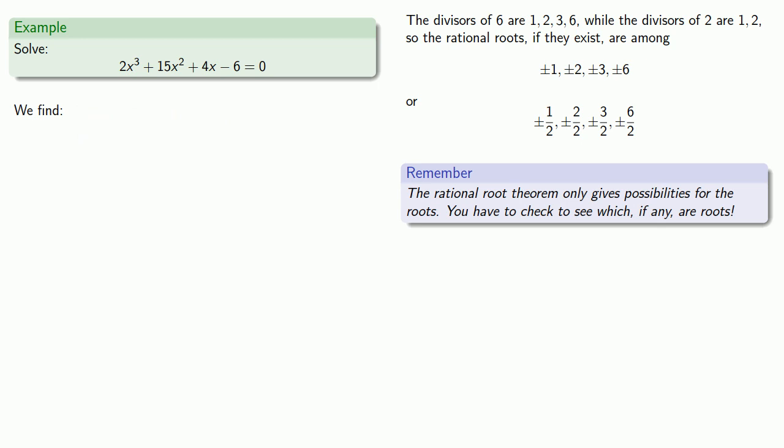We find that x equals 1 half is a root. And so our polynomial factors as x minus 1 half times. And we'll make our life a little bit easier by factoring a 2 out of this second polynomial.